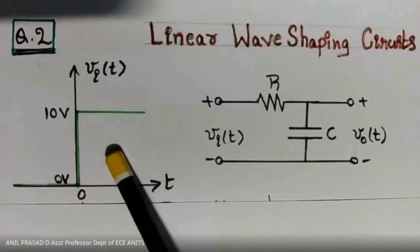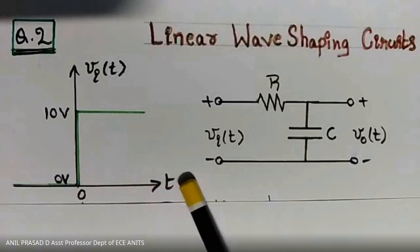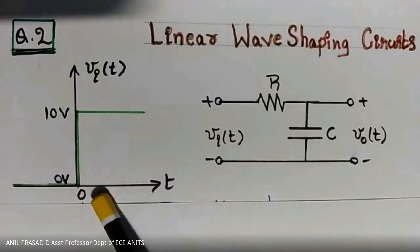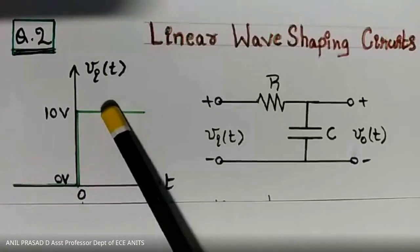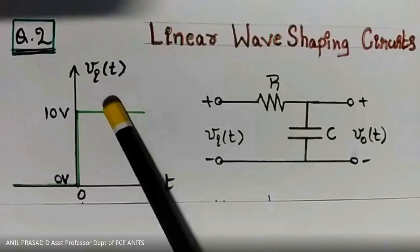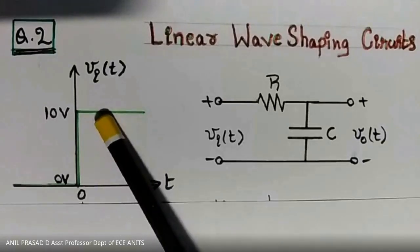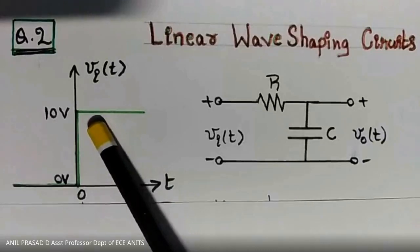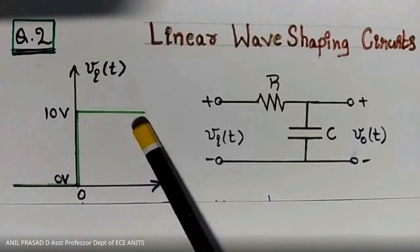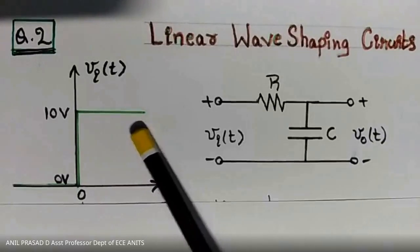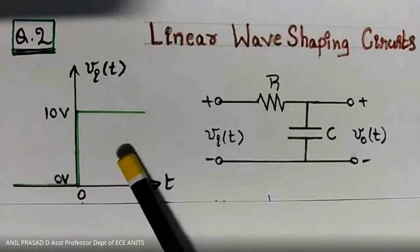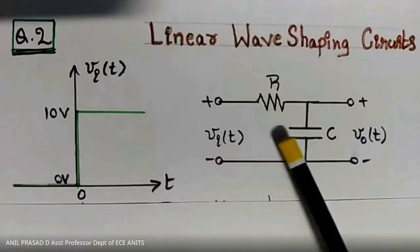The step input signal varies as a function of time t. At t equal to 0, it suddenly changes from 0 volts to 10 volts, and thereafter it remains constant at 10 volts. That is the behavior of the step input signal.